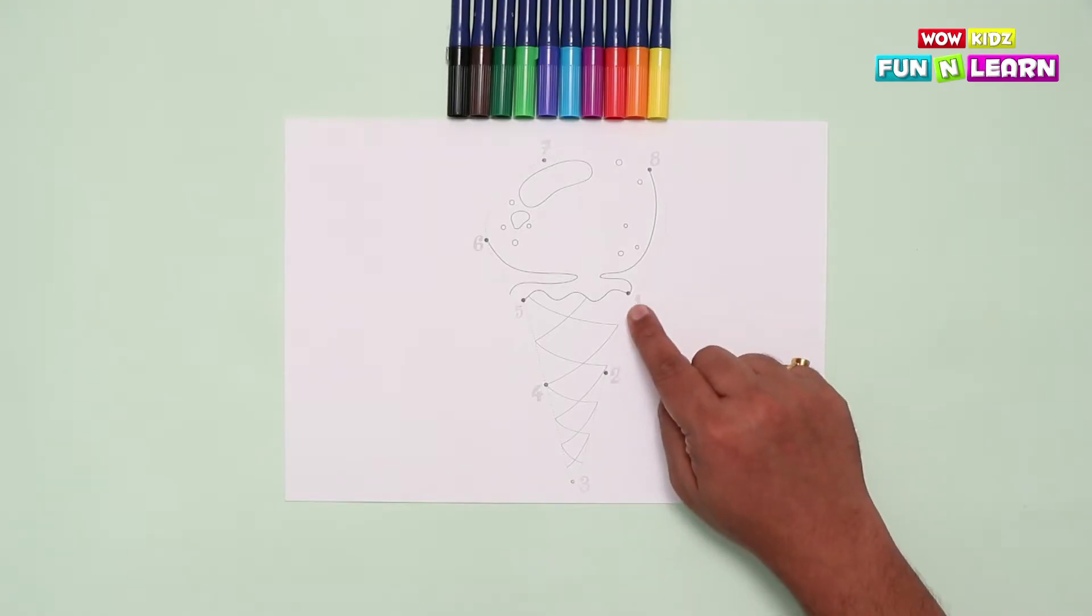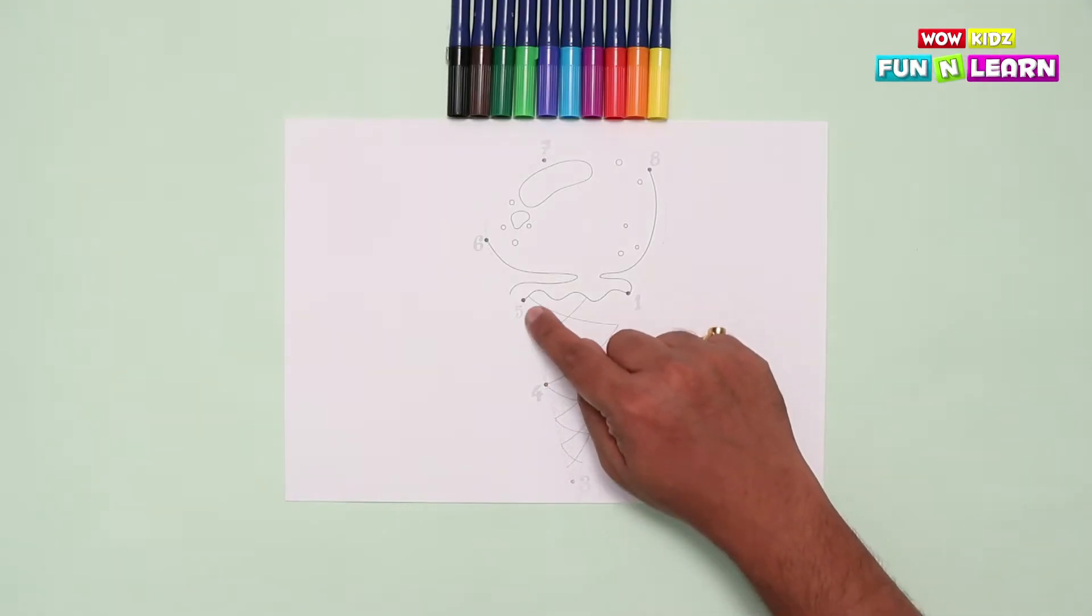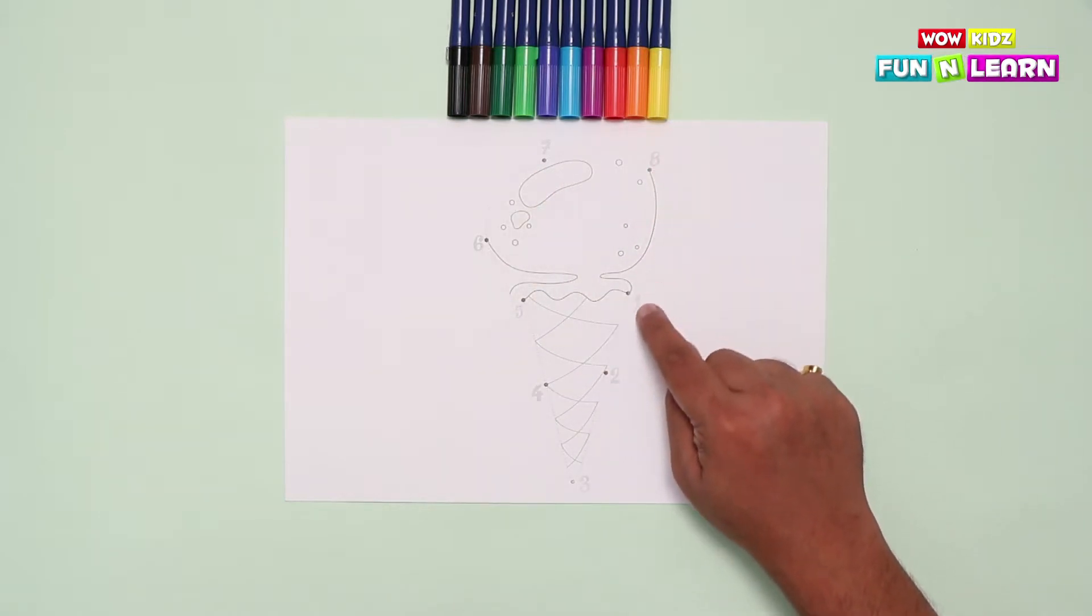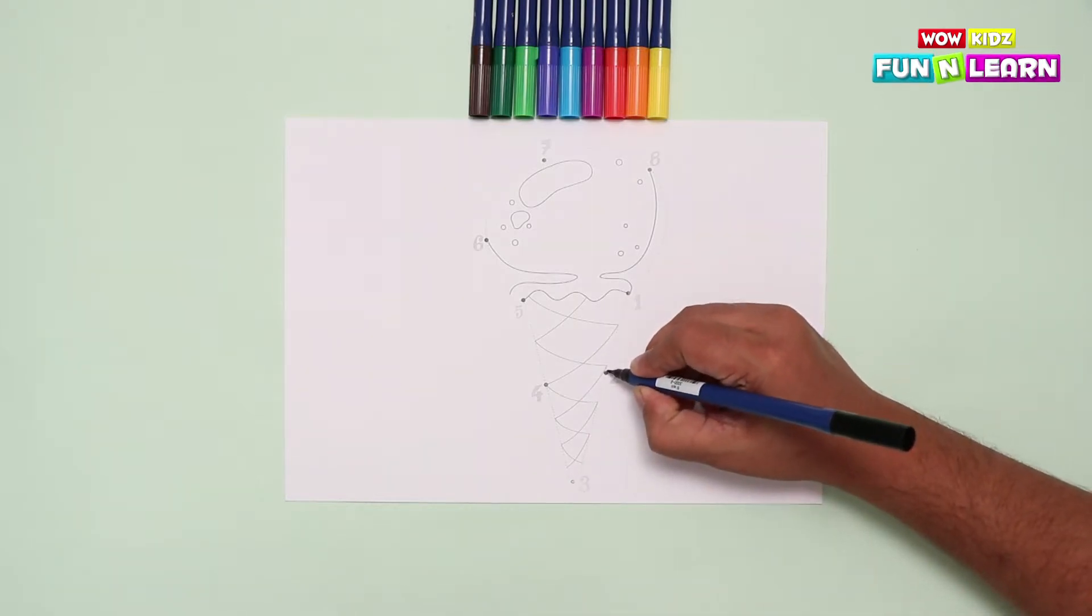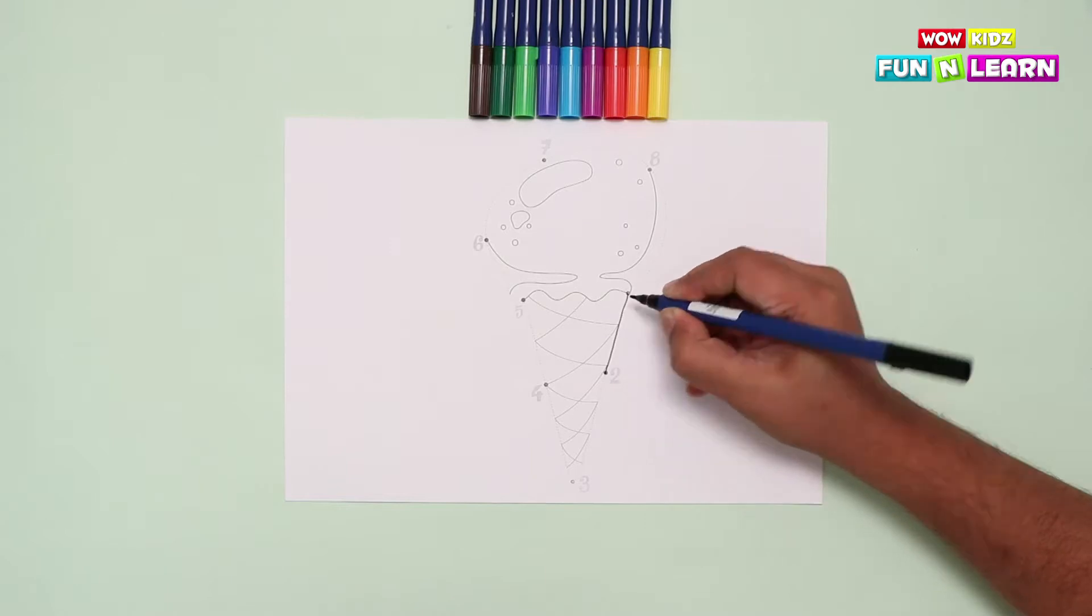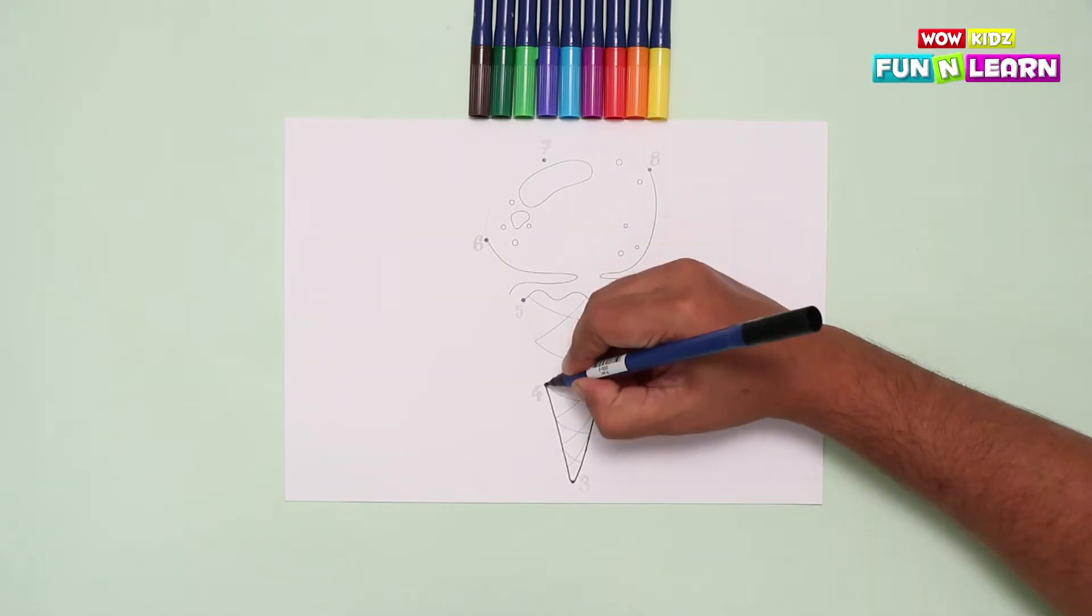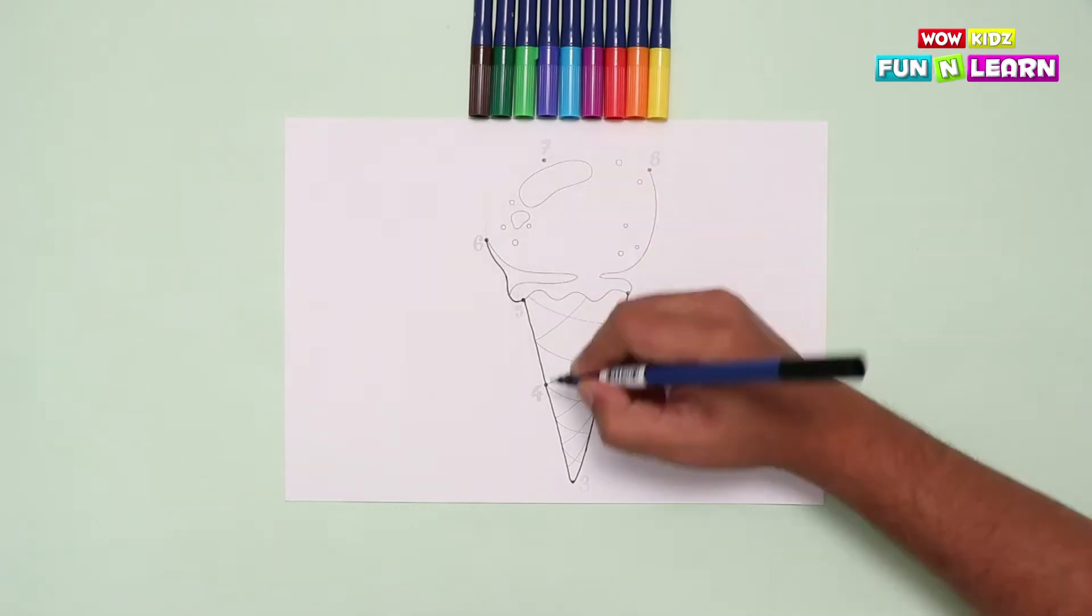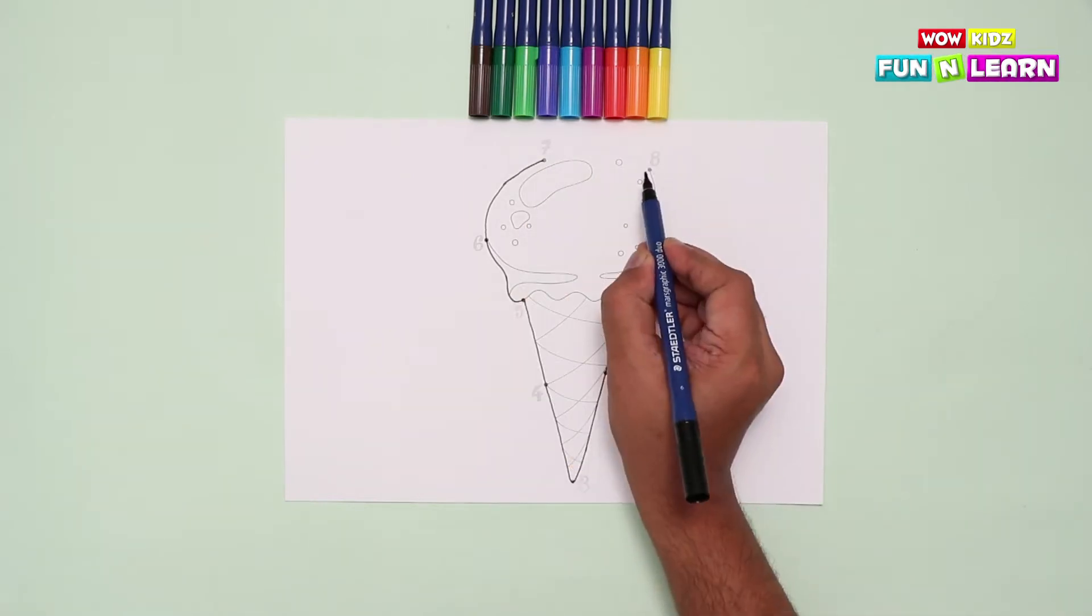You see these dots here? These dots will make the outline. Let's start with joining all the dots here, making the outline. This makes our cone. And this is the over-bulging ice cream here.